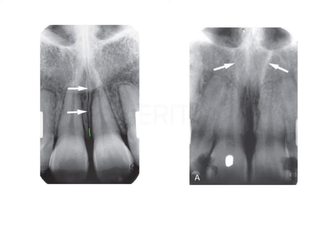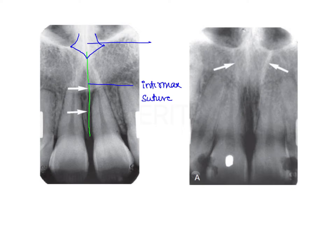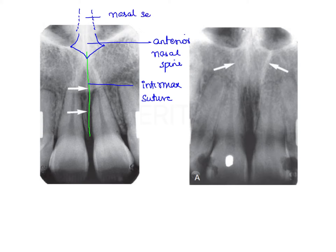In the first radiograph, we can find a thin radiolucent line between the two central incisors, which is the intermaxillary suture. The intermaxillary suture extends from the alveolar crest between the central incisors superiorly up to a V-shaped radio-opaque structure known as the anterior nasal spine. The anterior nasal spine is followed superiorly by the nasal septum, and on either side of it is the floor of the nasal fossa, also called the floor of the nasal aperture.